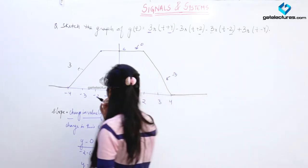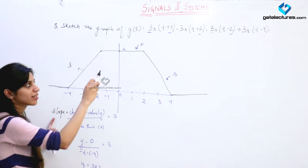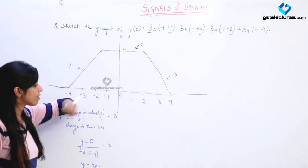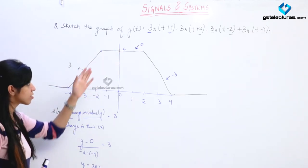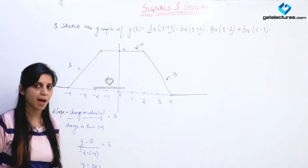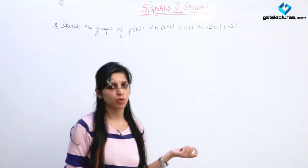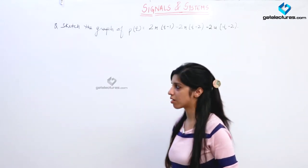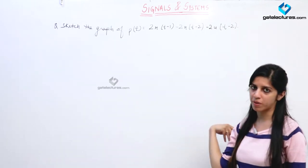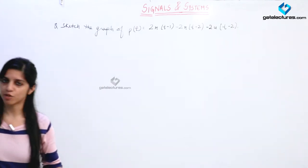So this is how the given signal is going to look. One thing to keep in mind is that when you are given the slope, you just need to calculate the final value at instances where the slope is changing, and sketch accordingly. This is how this graph is going to look. Now we are going to look at a graph involving both ramp and unit step signals.